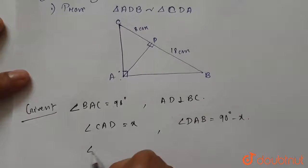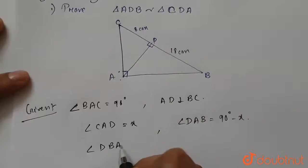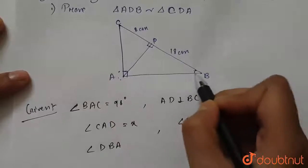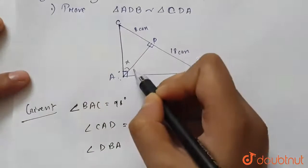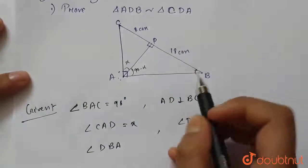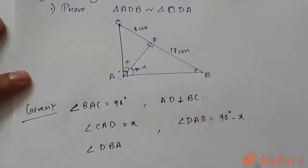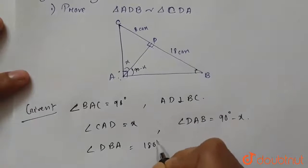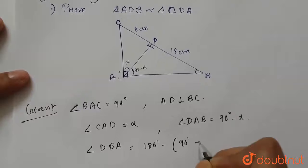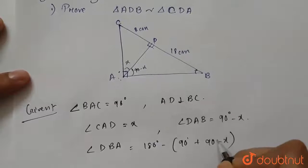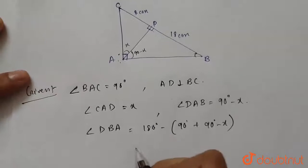Now angle DBA - we have taken this as X, so this is 90 minus X. Now DBA from this triangle, this is 90 degrees, so angle DBA will be equals to 180 degrees minus 90 plus 90 minus X. So this equals X.